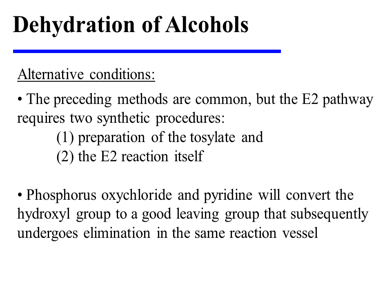The preceding methods are very common, but the E2 pathway does require two synthetic procedures. The substrate must first be converted to the tosylate, and then the E2 reaction itself can be conducted. There is an alternative set of conditions in which the substrate is treated with phosphorus oxychloride and pyridine, which will convert the hydroxyl group into a good leaving group that subsequently undergoes elimination in the same reaction vessel.